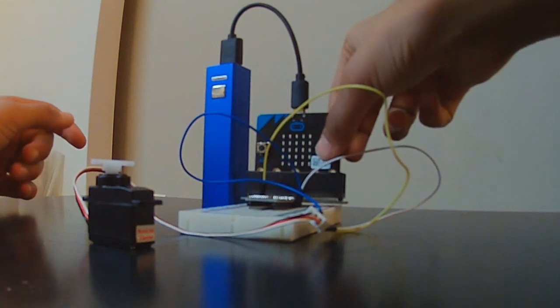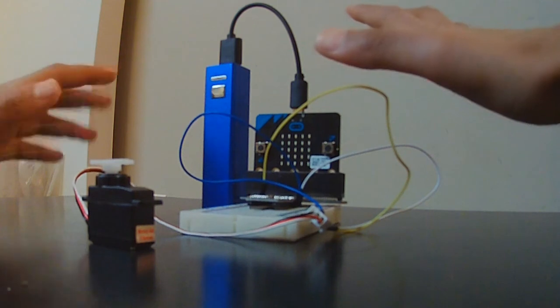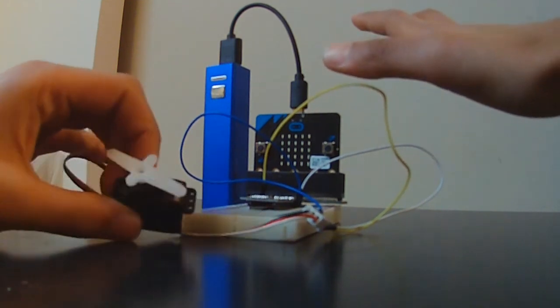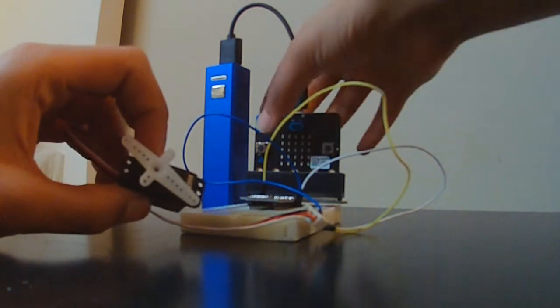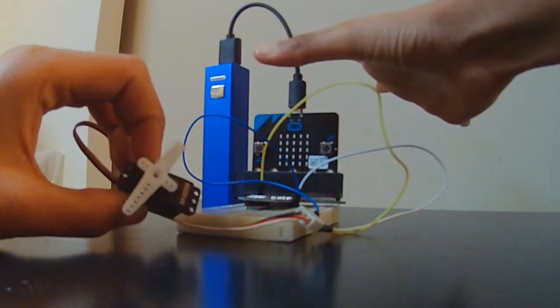So after you plug it in, after letting it flash and put it on the micro bit, if you click A then it'll move in one direction, and if you click B then it'll move in another direction.